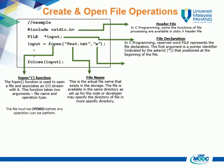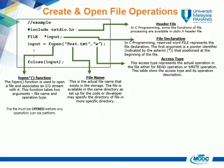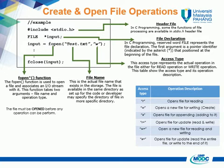Access type: this represents the actual operation on the file, either for read operation or write operation. This table shows the access types and their operation descriptions. At this point, we only cover six access types.